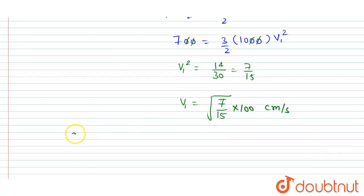Volume flow rate, DV by DT equals A1 V1. So A1 we already given in the question is 40 and V1 we calculated is this in centimeter per second.